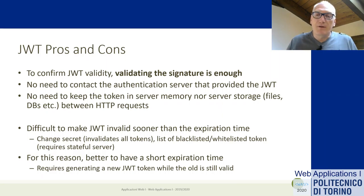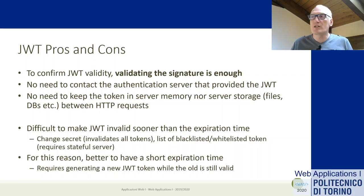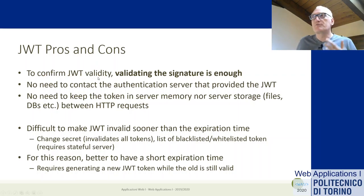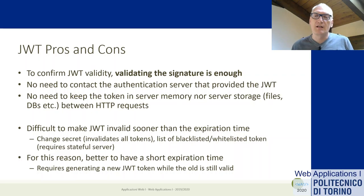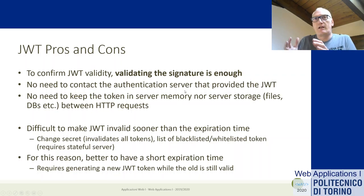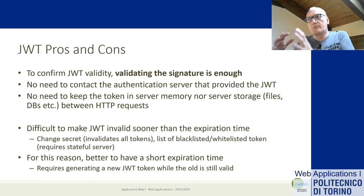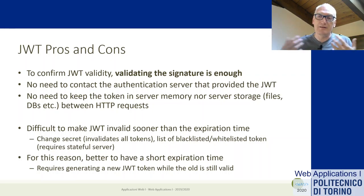Validating a JWT is easy: you just need to validate the signature. If the signature is valid, the token was issued by an authorized issuer, so you don't need to go back to the server that originally provided it. This means you can have a separate authentication server that generates the token and a different authorization server that checks API access. You can play with JWT on the referenced websites to generate and inspect tokens and experiment with different algorithms.